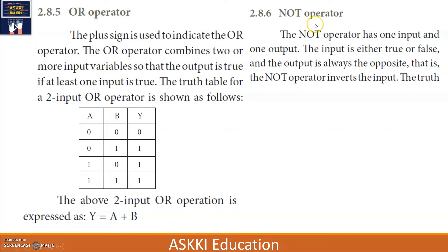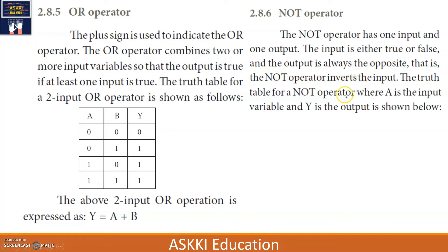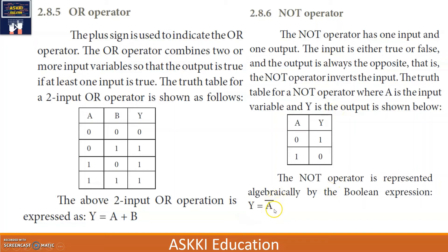Coming to the NOT operator — it has only one input and one output. The NOT operator inverts the input: if the input is true the output is false, and if the input is false the output is true. The truth table shows: when A is 0, Y is 1; when A is 1, Y is 0. The expression is Y = Ā (A-bar) or Y = A' (A apostrophe).